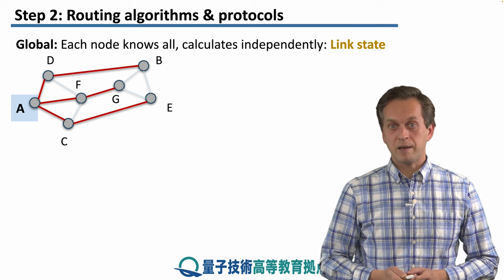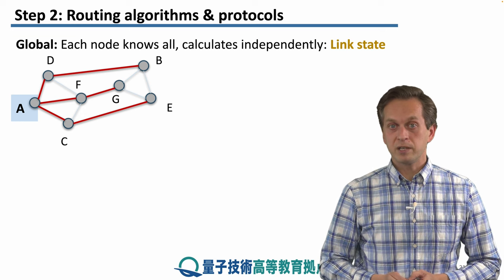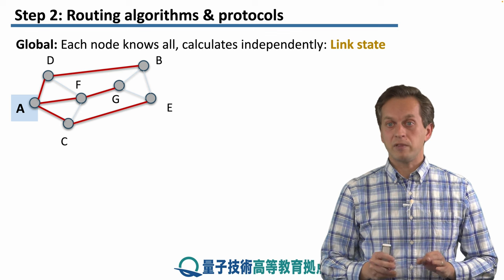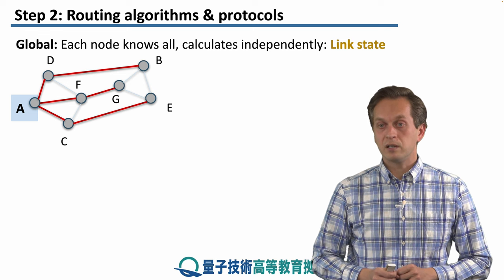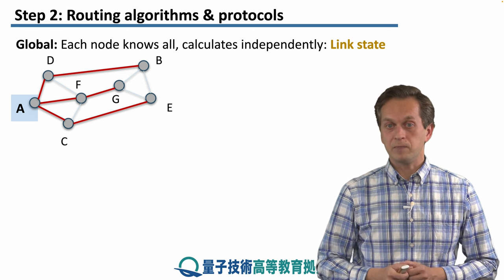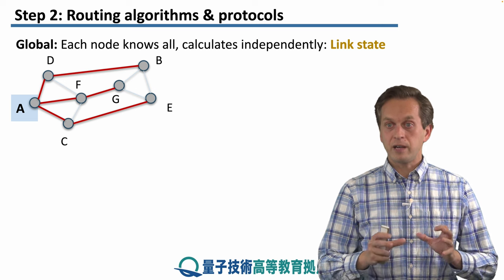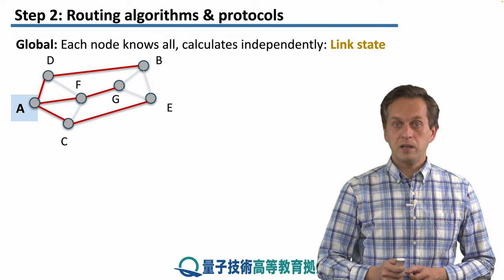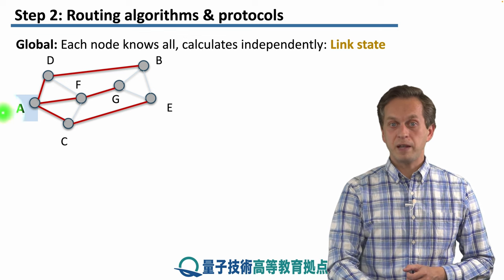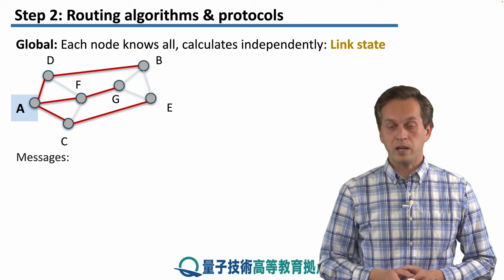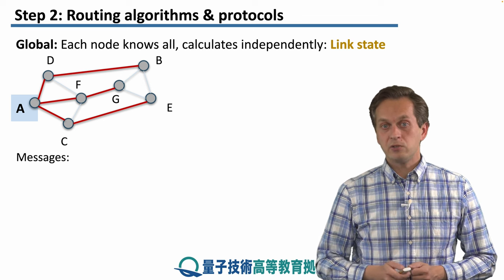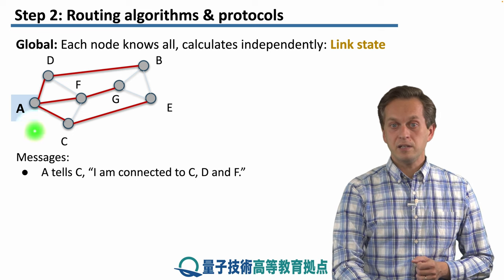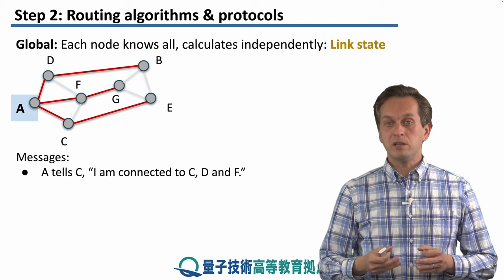Let's move on to the second type: global routing algorithms. Here, each node knows everything about the network but makes decisions independently and locally. The knowledge of the entire network topology being built by all nodes is known as the link state. The spanning tree built by node A is constructed through messages — for example, A tells C: I'm connected to C, D, and F, informing it who can be reached from A.